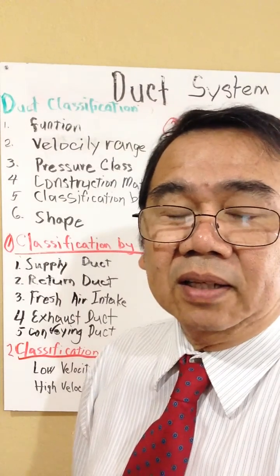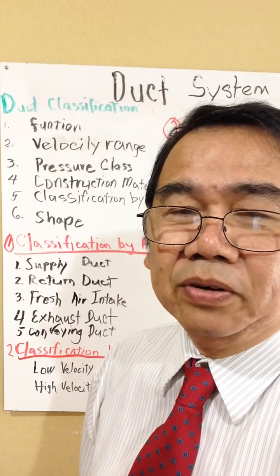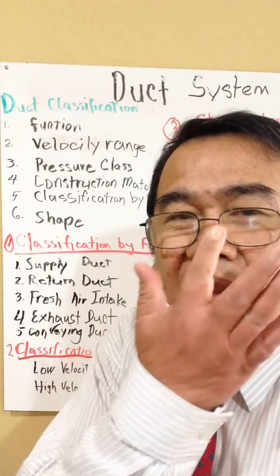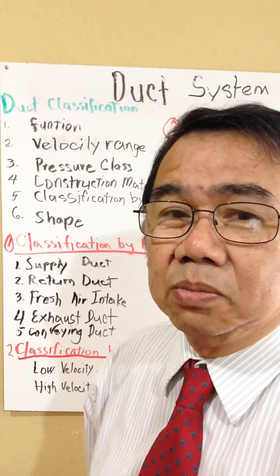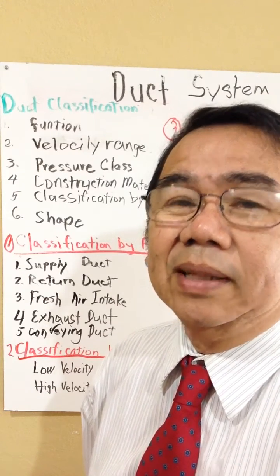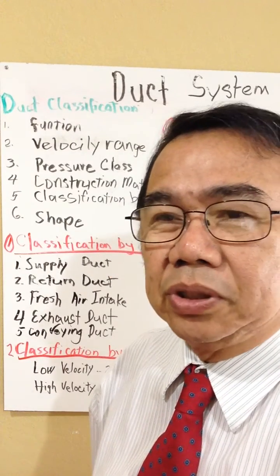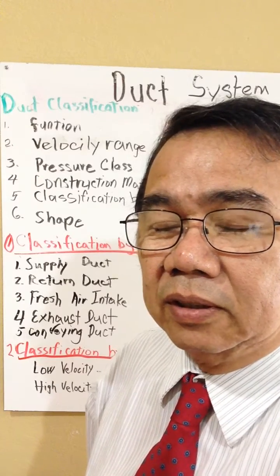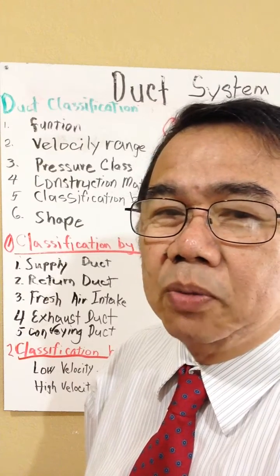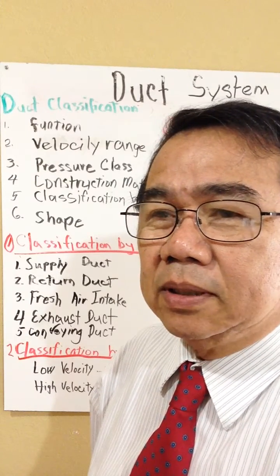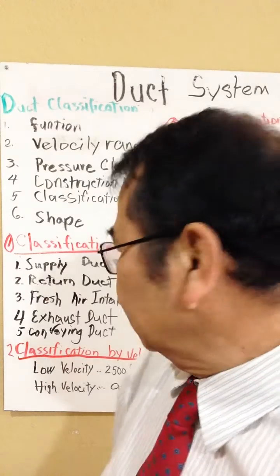The exhaust duct exhausts all the dirty air that has been used inside the room. For example, in the kitchen, the exhaust duct will discharge the smoke, the smell, and everything. Then we have the conveying duct, which is used for industrial purposes. For example, at the grinder, the lathe machine, and the welding machine, they produce smoke when work is performed, and this conveying duct will lift that smoke and discharge it outside the building.